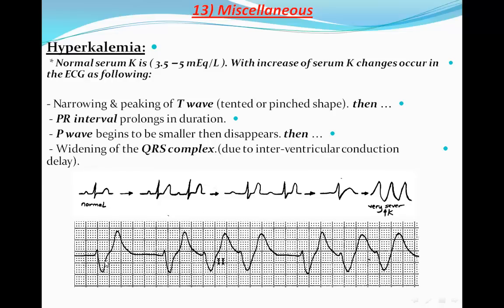This ECG is from one of my patients I saw many years ago in the hemodialysis unit. His potassium level was 9.7 milliequivalents per liter, and unfortunately this patient died 30 minutes later. This is a very wide complex, as we can see here, without any P wave — what we call sine wave appearance — representing severe hyperkalemia. This is of course an emergency.